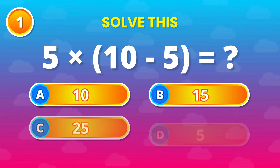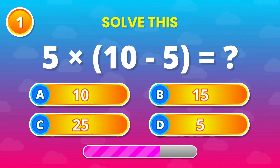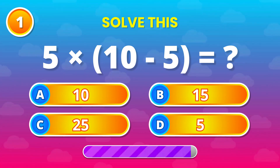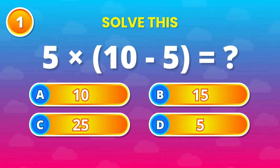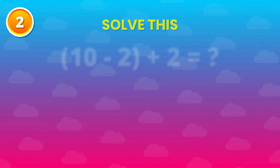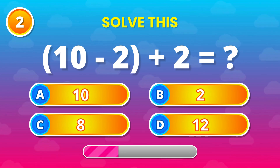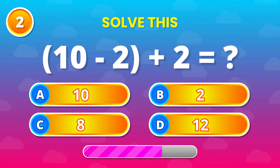What is 5 multiplied by (10 minus 5)? The correct answer is 25! Great job if you got that right!